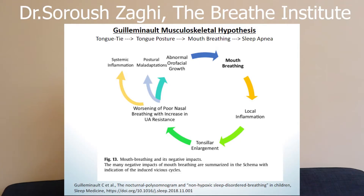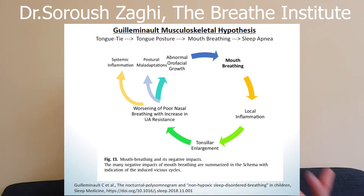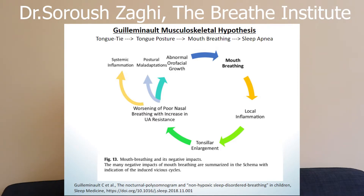I wanted to bring this cycle to people's attention — this is the Guilleminot musculoskeletal hypothesis. Dr. Guilleminot was the pioneer of sleep research, especially in sleep disordered breathing. He discovered sleep apnea and UARS, making amazing contributions. His hypothesis: mouth breathing leads to local inflammation. When you breathe through your nose, air is filtered through the sinuses and nitric oxide is produced, which goes into your lungs. Without these factors, you get local inflammation, which may further tonsillar and soft tissue enlargement, which then worsens nasal breathing and upper airway resistance, and starts causing abnormal facial growth, postural issues, and systemic inflammation.